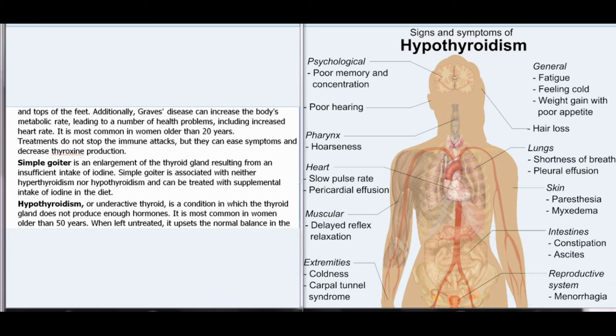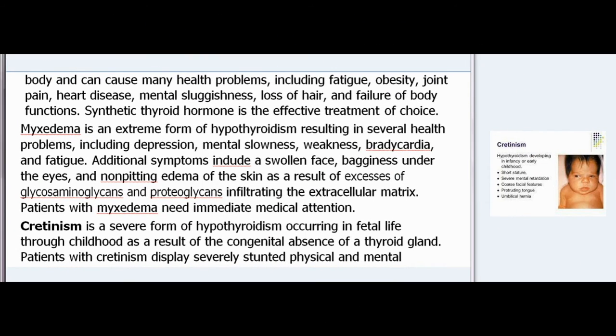Simple goiter is an enlargement of the thyroid gland resulting from insufficient intake of iodine. It is associated with neither hyperthyroidism nor hypothyroidism and can be treated with supplemental iodine intake. Hypothyroidism, or underactive thyroid, is a condition in which the thyroid gland does not produce enough hormones; it is most common in women older than 50 years. When left untreated, it upsets the body's normal balance and can cause fatigue, obesity, joint pain, heart disease, mental sluggishness, loss of hair, and failure of body functions. Synthetic thyroid hormone is the effective treatment of choice.